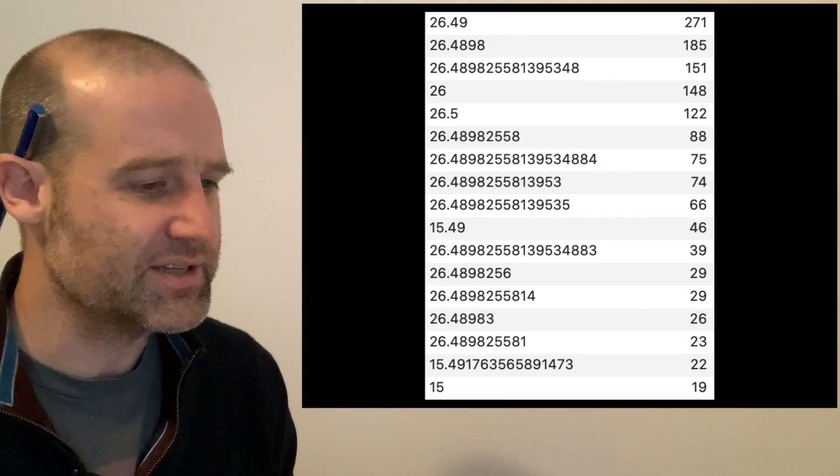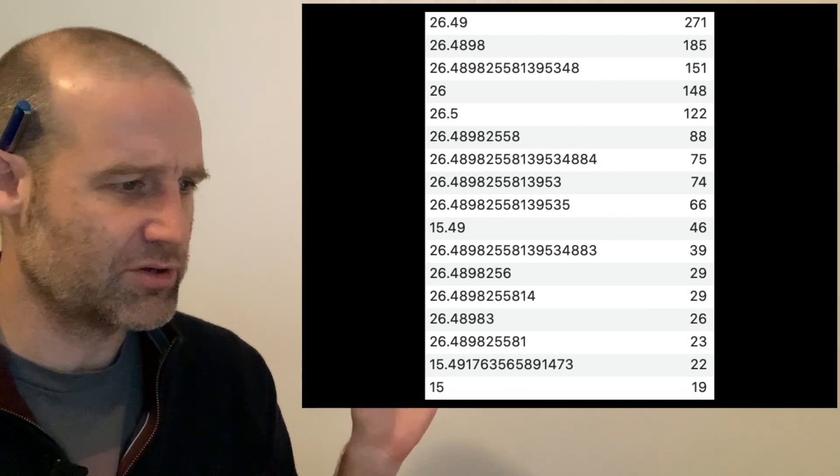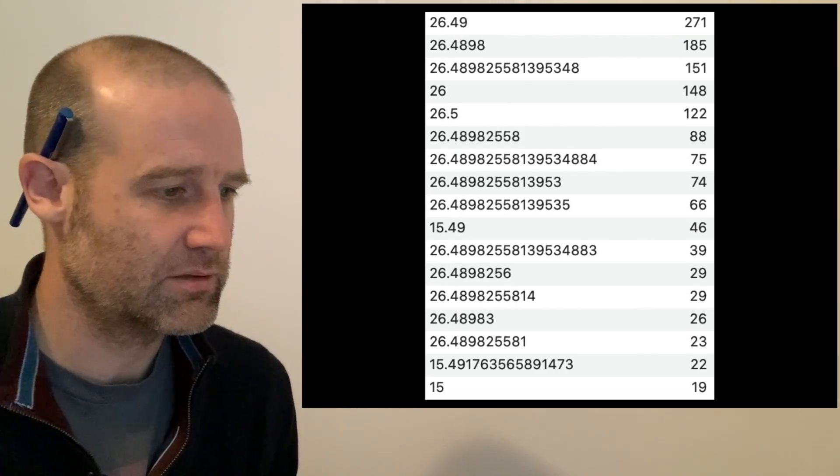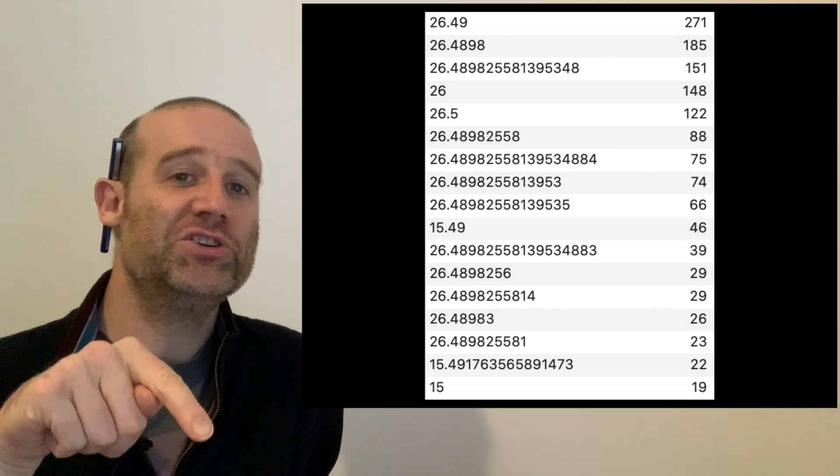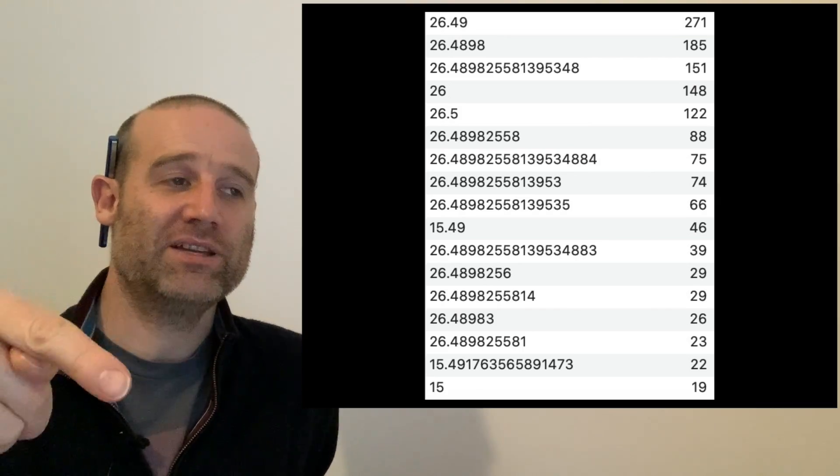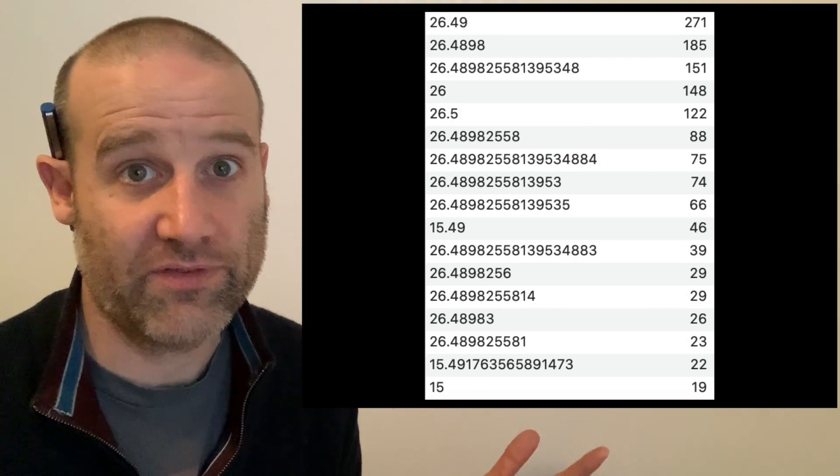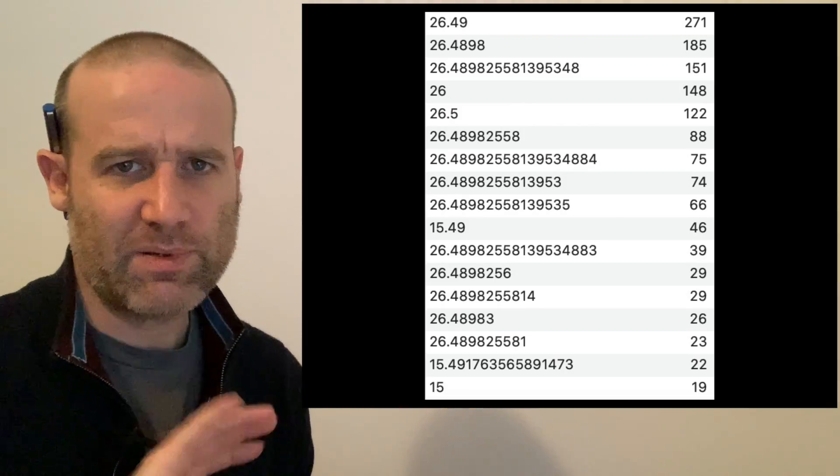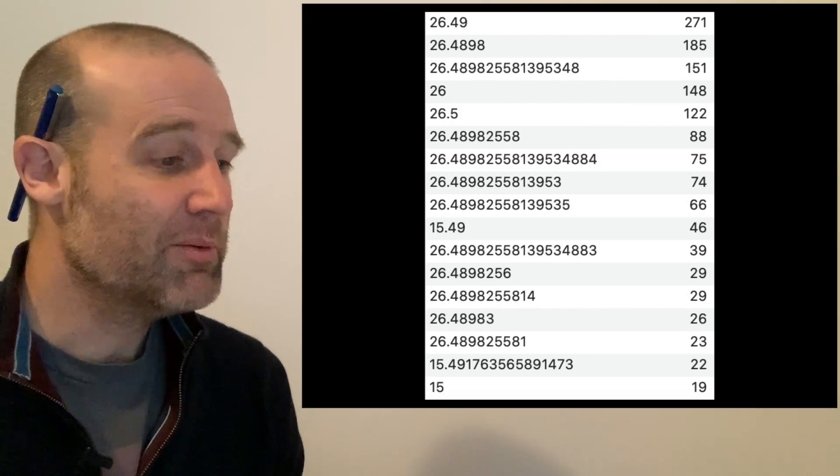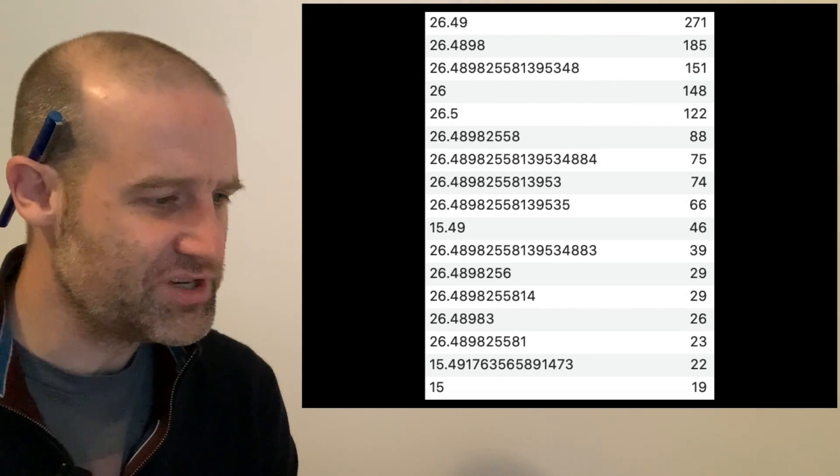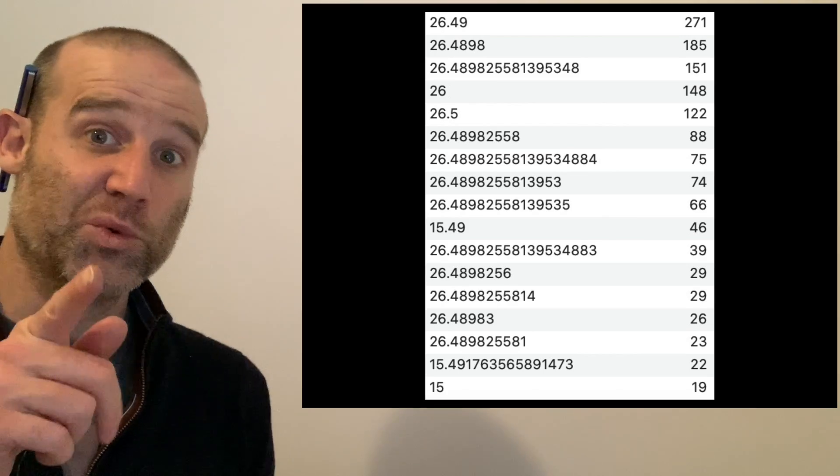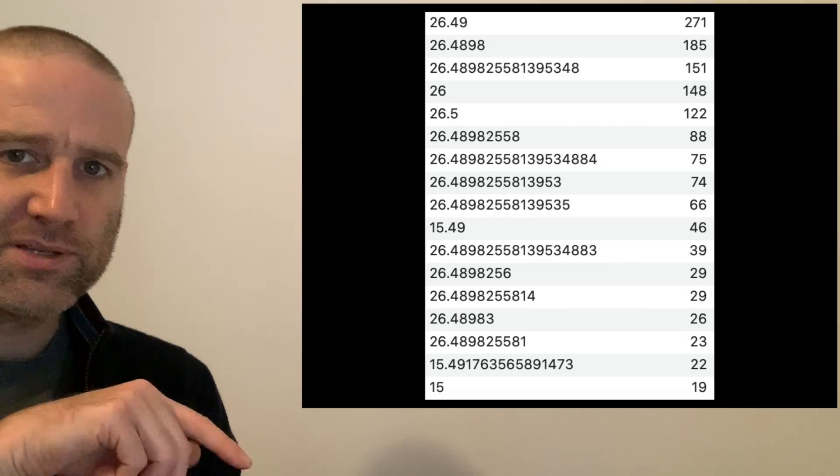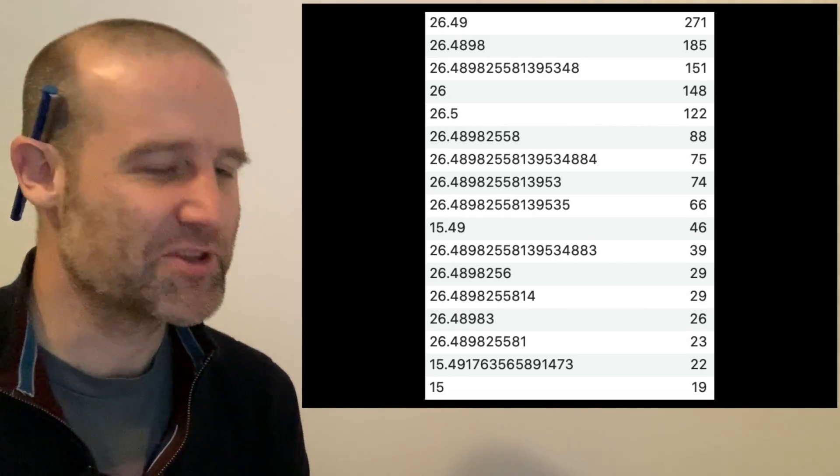Oliver pulled out all the most common answers from the database. You can see 26.49 is the most common answer. It was interesting seeing what level of precision people put in. Most people thought two digits is plenty, followed by four digits, followed by a lot of digits. You'll see 15.49 surprisingly common and down the bottom some more 15s. I'll get to those in a moment.